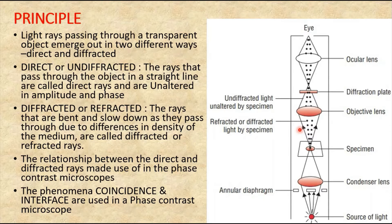As a result of increased amplitude, the object looks very bright in the phase contrast microscope. On the other hand, interference occurs when the direct and diffracted rays are out of phase — meaning the crest of one wave coincides with the trough of another. This is called reverse phase, and their amplitudes cancel each other, so the object appears darker due to this interference property.